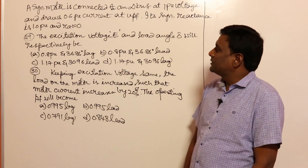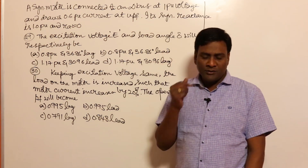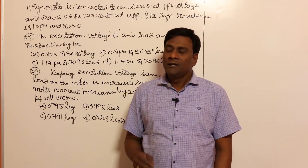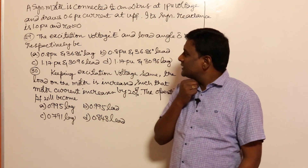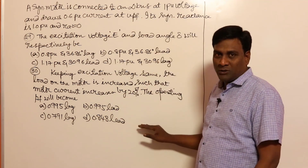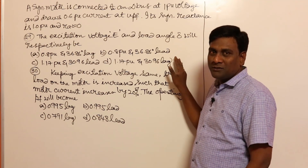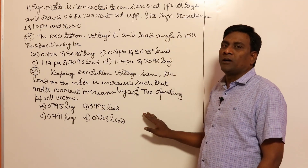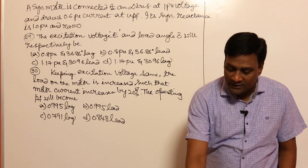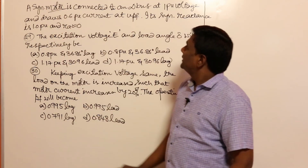Let us solve some more questions on synchronous machines. In synchronous, they don't ask very complicated questions. For example, take this question — it's a two marks plus two marks type. For the first question you need not solve, but the second question you have to solve. See how it is: a synchronous motor — motor is the key word here.